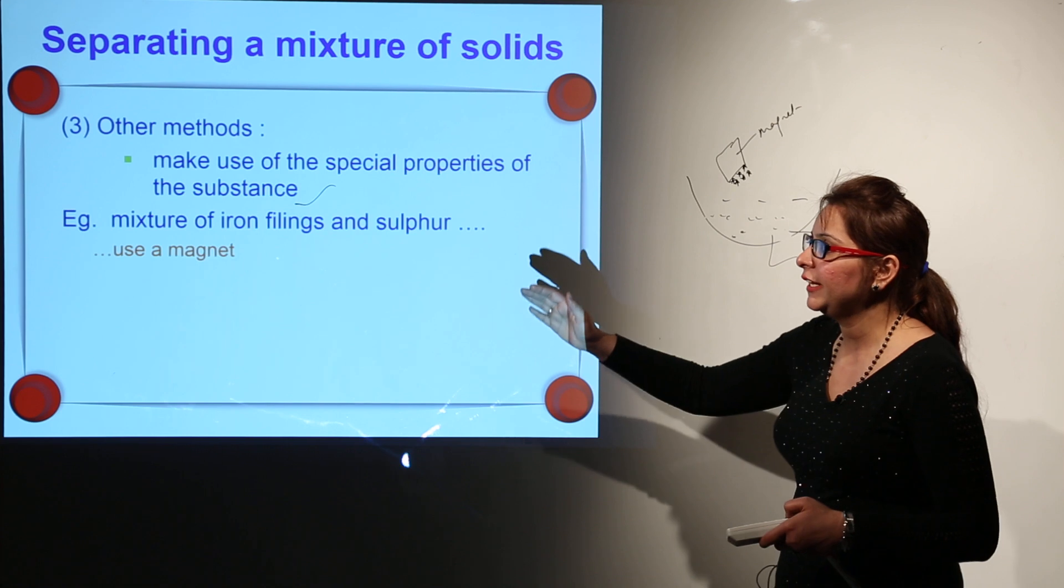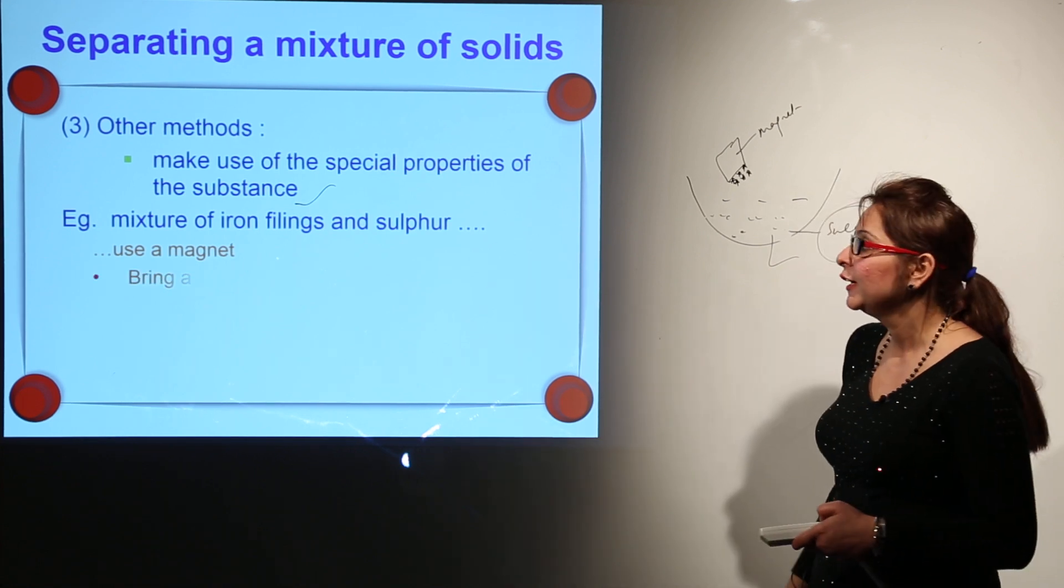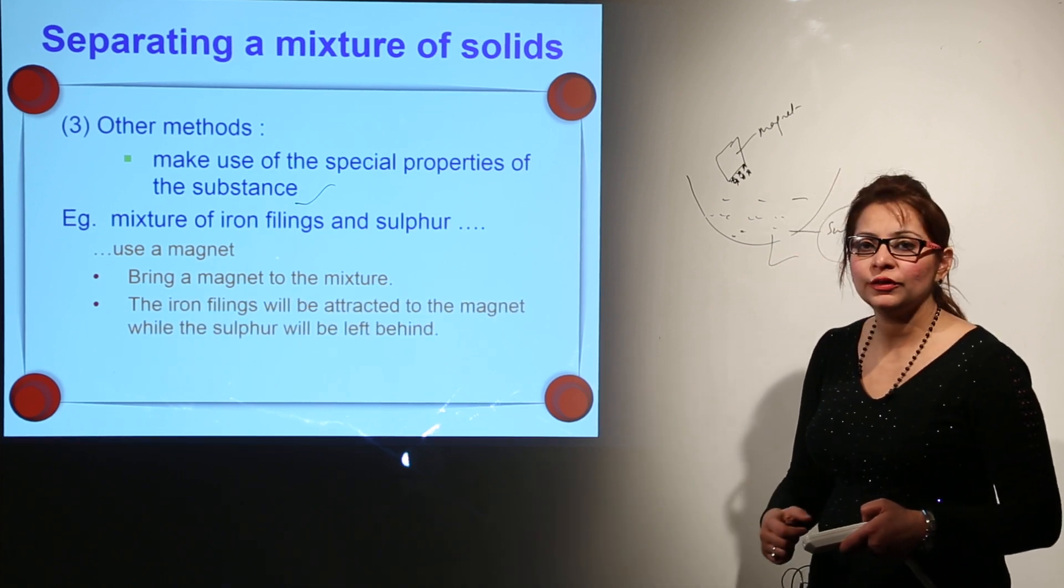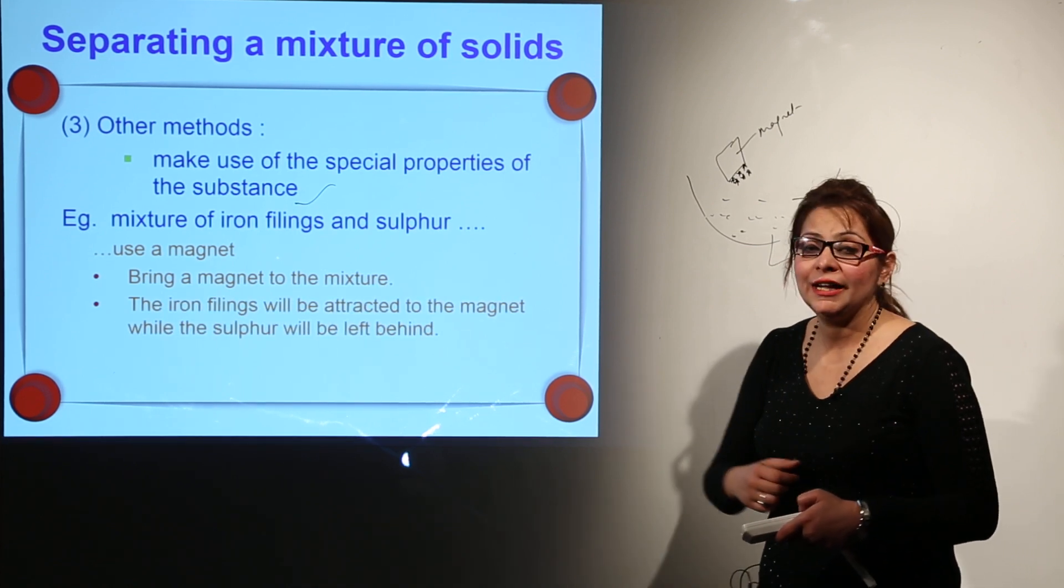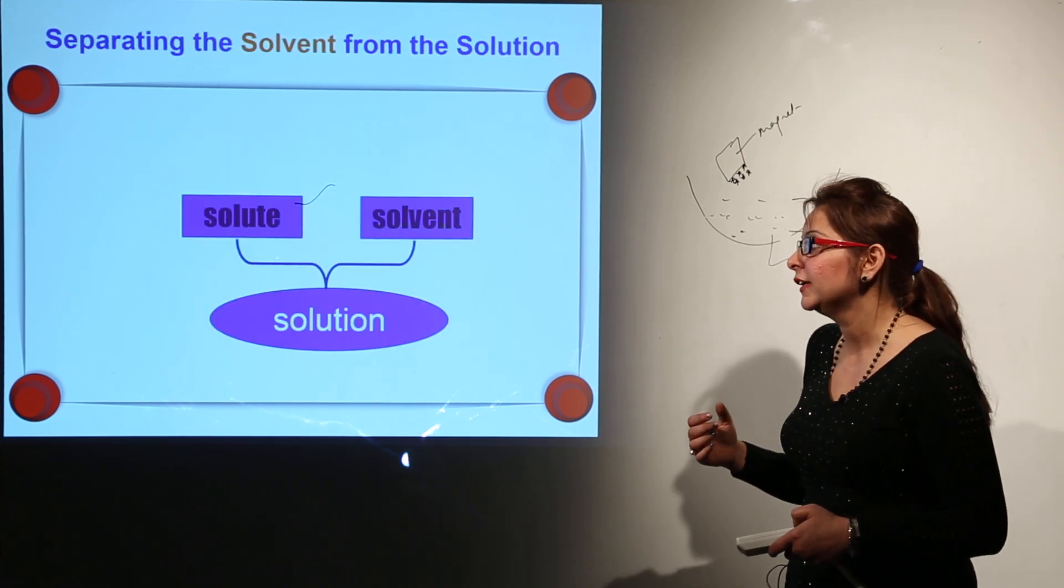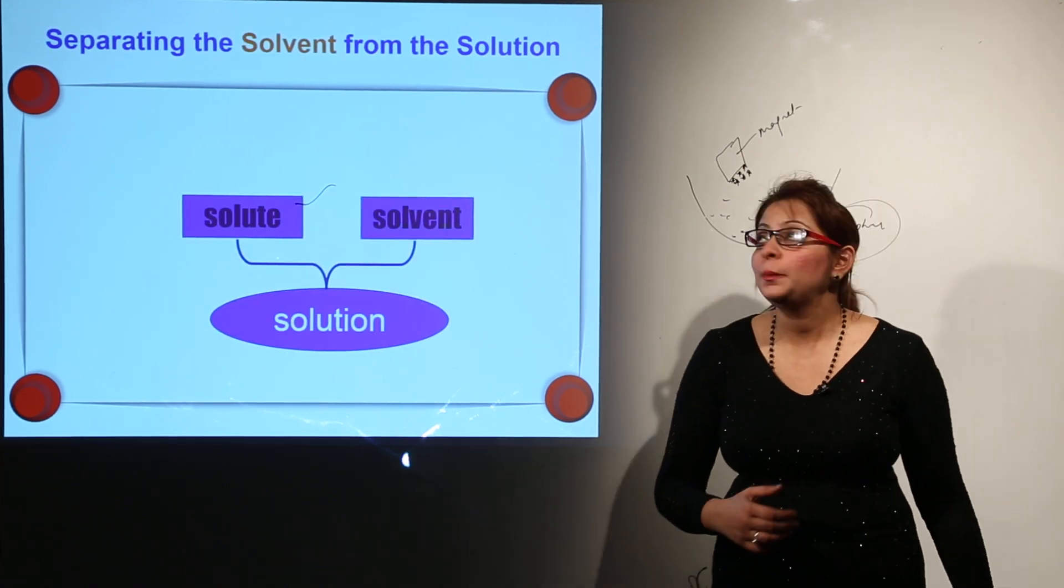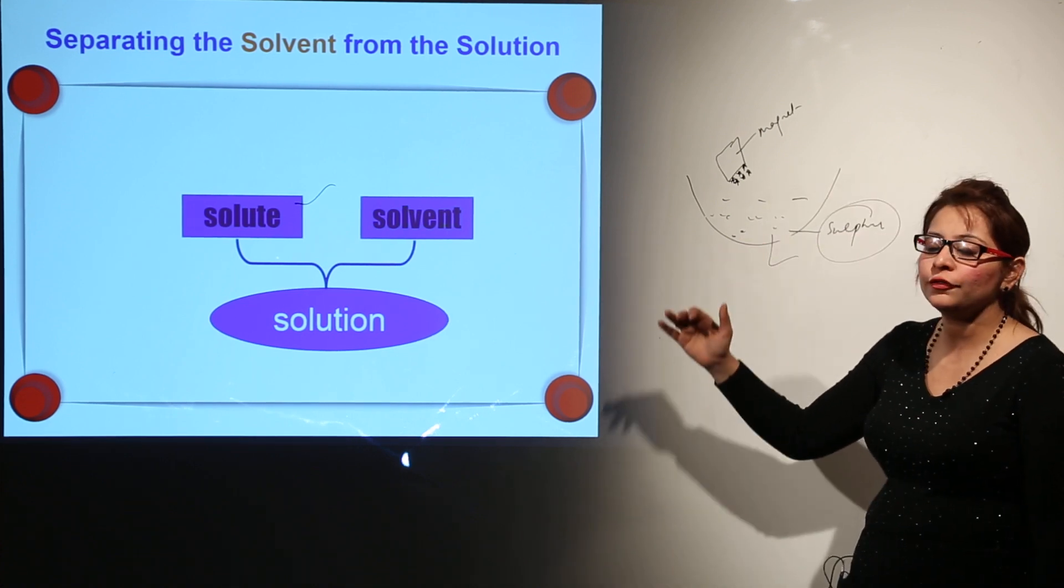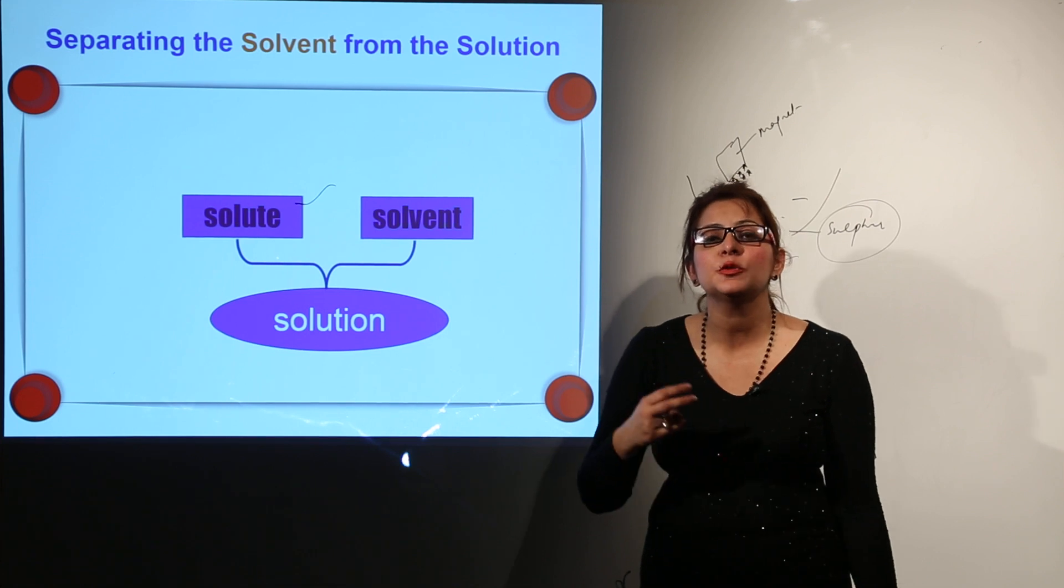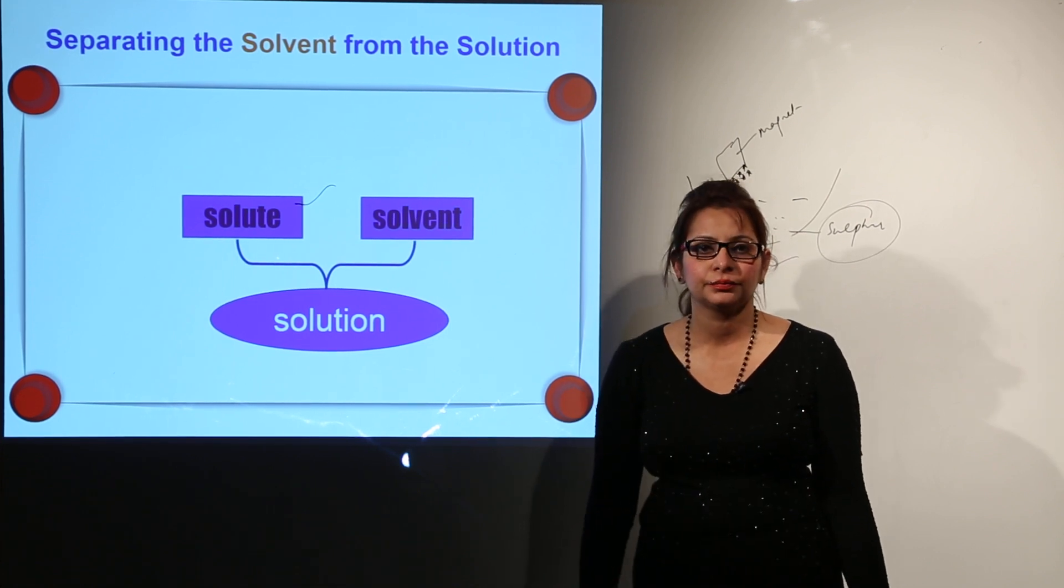Look at the board - they did it by the use of a magnet, we did it in the same way. They just bring the magnet to the mixture. Iron filings, we know, get attracted towards the magnet and the sulfur won't be affected, so it will stay behind. This is how we can separate these two solid components by using their special properties.